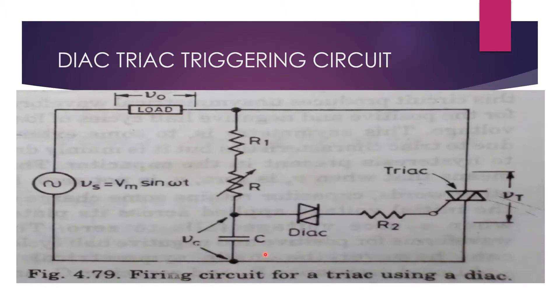The figure shows the circuit diagram for a DIAC-TRIAC triggering circuit. This circuit consists of the source Vs equal to Vm sin omega t, it is an AC source.